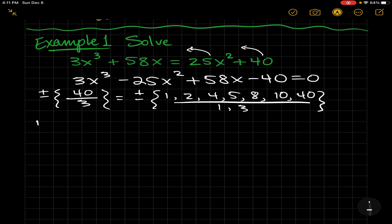Remember we want every possible combination. So that's all of these over 1, and then I also need all of those numbers over 3. Hopefully we don't have to check this far, but these are all the possibilities.